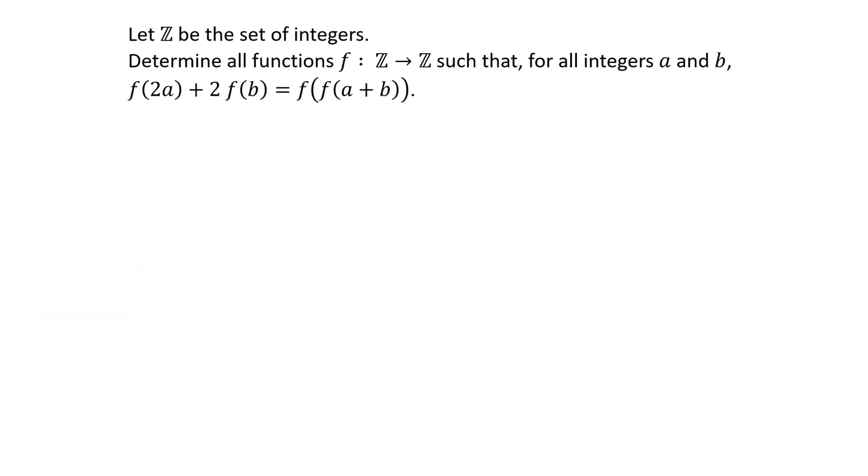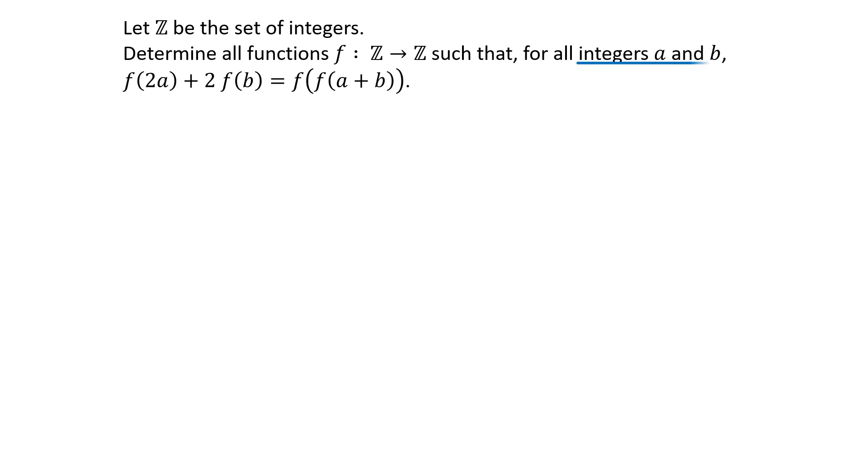Let's solve the problem. In the first part, since A and B are integers, A plus B is also an integer. Assume A plus B equals X, and we get the equation F of 2A plus 2F of B equals F of F of X.